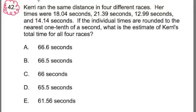Number 42. Carrie ran the same distance in four different races. Her times were 18.04 seconds, 21.39 seconds, 12.99 seconds, and 14.14 seconds. If the individual times are rounded to the nearest one-tenth of a second, what is the estimate of Carrie's total time for all four races?